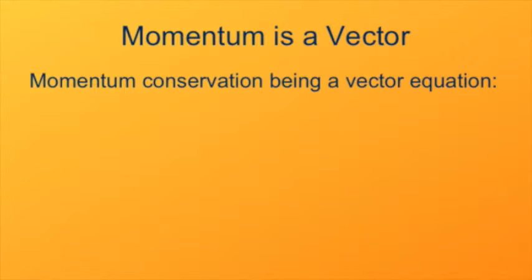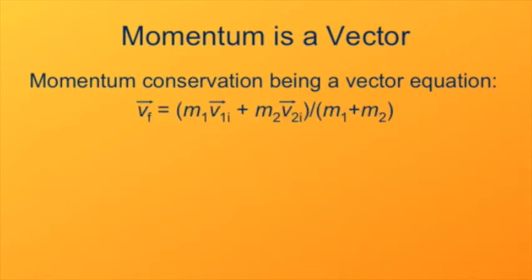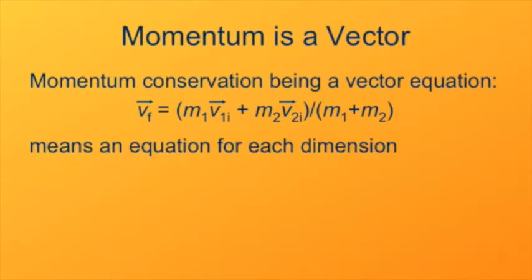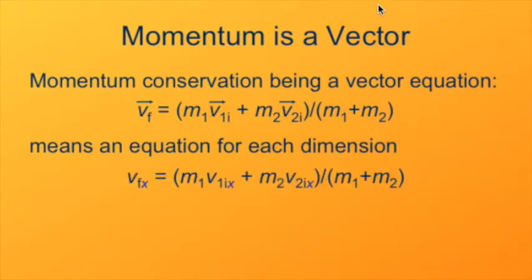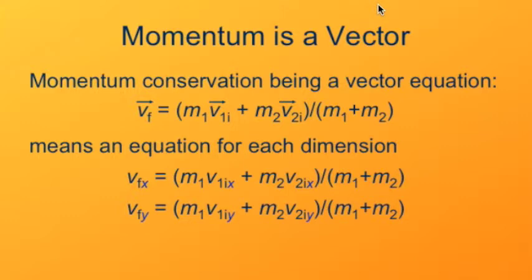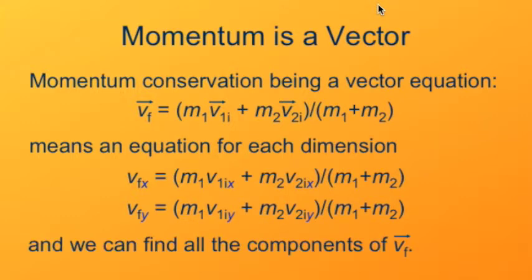One thing to note is that all the quantities in this analysis — momentum and velocity — are vectors and do act as vectors. When dealing with higher dimensions, such as two or three directions of possible motion, the vector nature is very important for carrying out calculations. Looking at a completely inelastic collision, the final velocity equals the total momentum divided by the total mass. Treating all velocities as vectors gives us a separate equation for each dimension — one for the x components and one for the y components — providing enough equations to solve for all components of the final velocity.